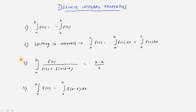The third property is very important because its application can be difficult. If you have integral a to b of f(x) divided by [f(x) + f(a+b−x)] dx — where the argument is upper limit plus lower limit minus x — then the answer is (b−a)/2. Please make a special note of this.